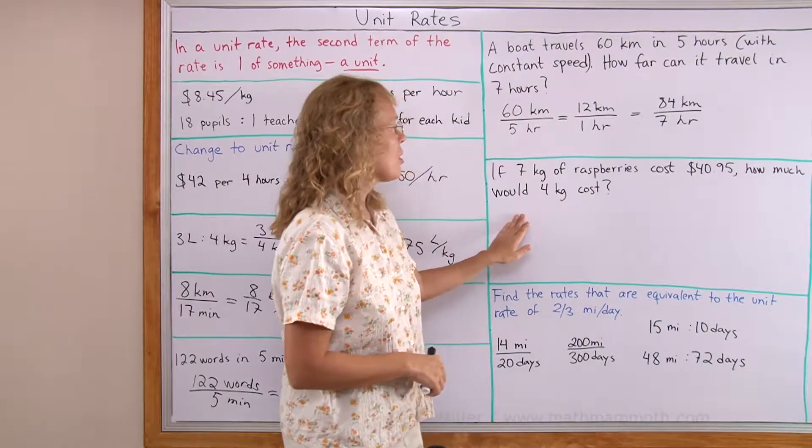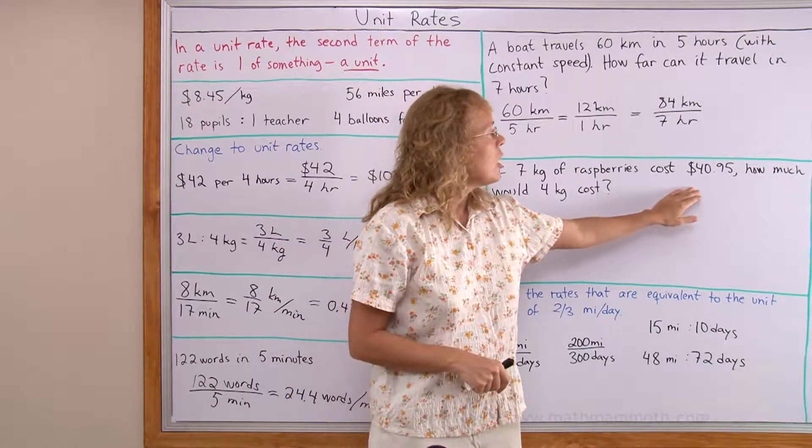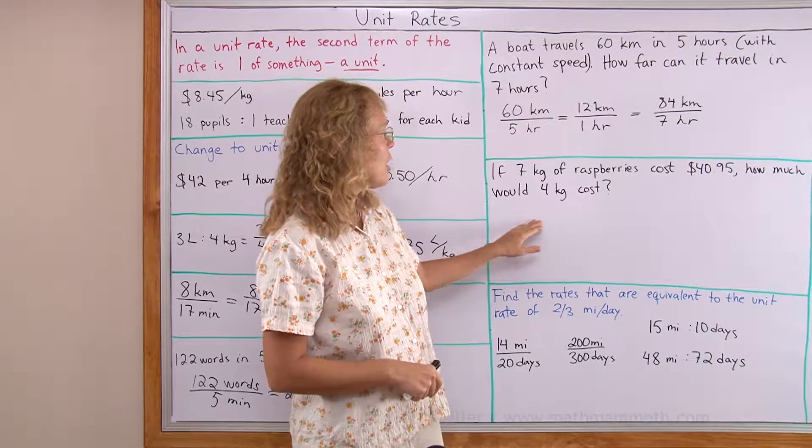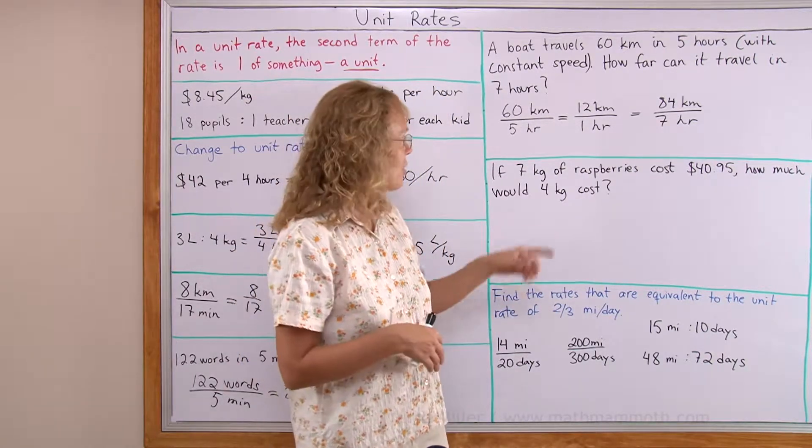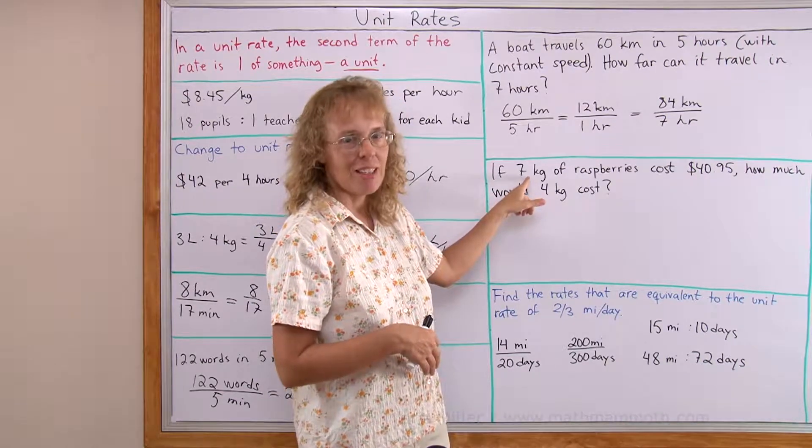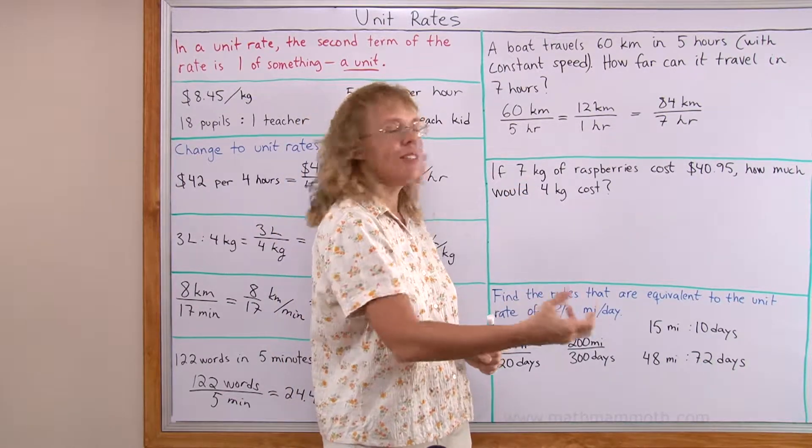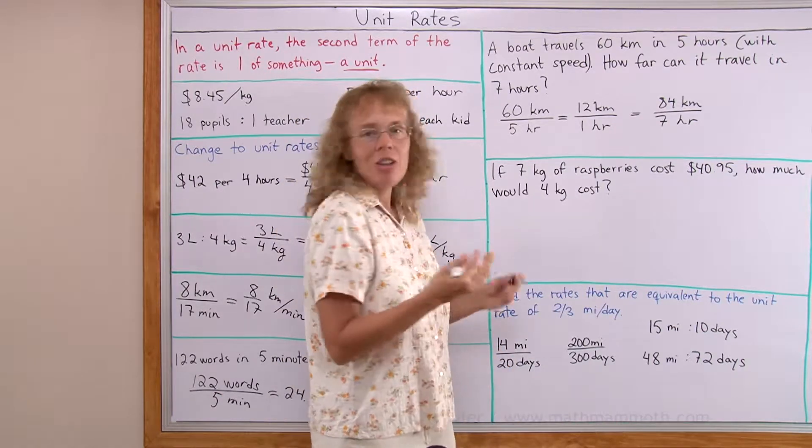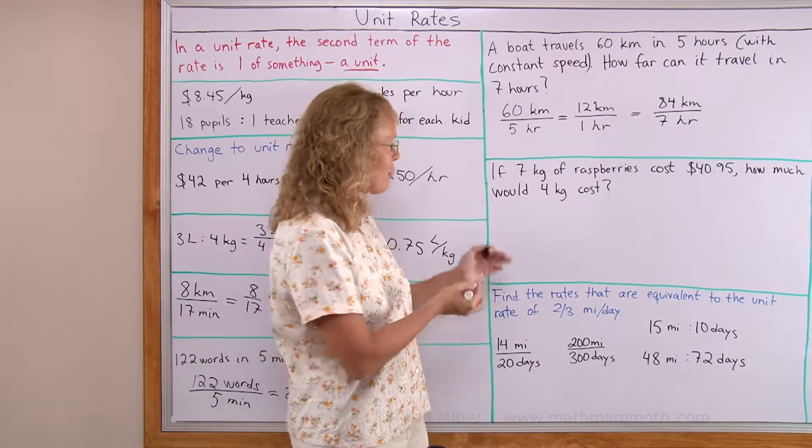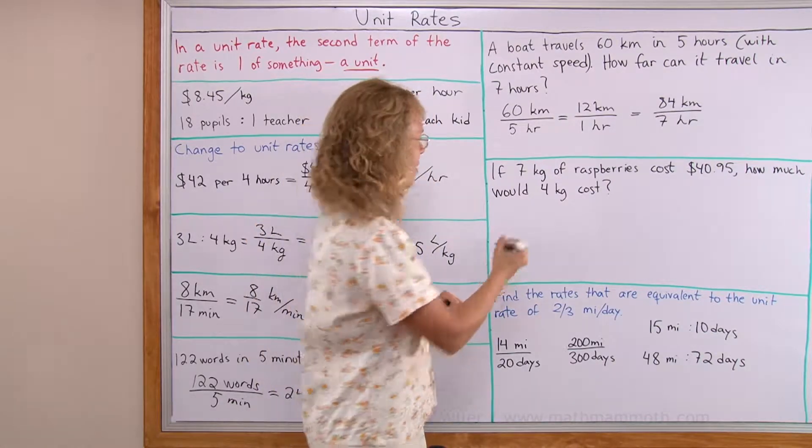If 7 kg of raspberries cost $40.95, then how much would 4 kg cost? Again we will use the unit rate. We will find the price for 1 kg, for the unit. And then after that multiply to find the price for 4 kg. You already know how to solve this, but we will now just write it out using rates.